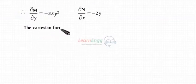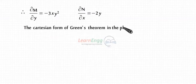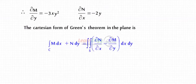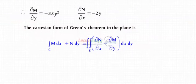Therefore, the Cartesian form of Green's Theorem in the plane is: the closed integral of M dx plus N dy equals the double integral of (∂N/∂x minus ∂M/∂y) dx dy.